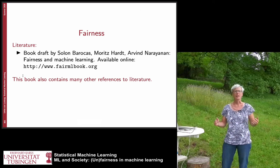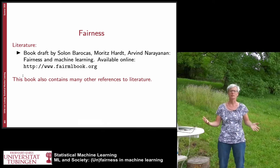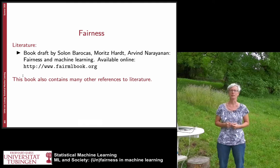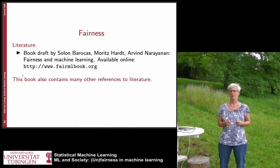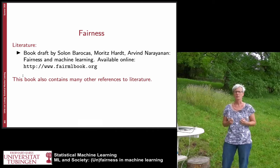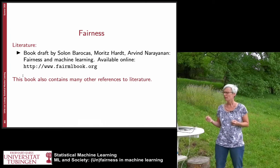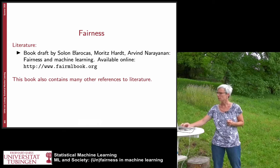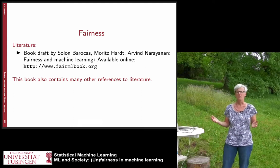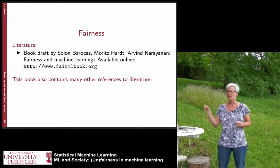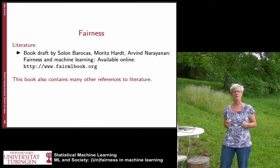In the last lecture I discussed the general debate about machine learning in society and the important issues and keywords. One of the keywords I mentioned briefly is fairness, and now we want to focus on fairness of machine learning algorithms for the next couple of slides. A reference you can look at is the book draft by Solon Barokas, Moritz Hart, and Arvind Naranayan, 'Fairness and Machine Learning,' which is online — still a draft but many chapters are ready. In the slides I will refer to it as the FairML book.